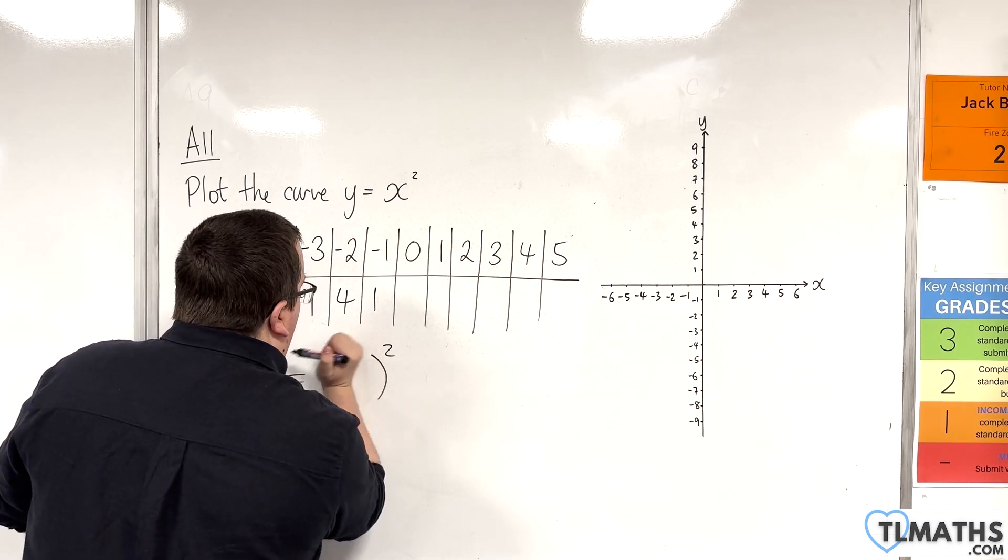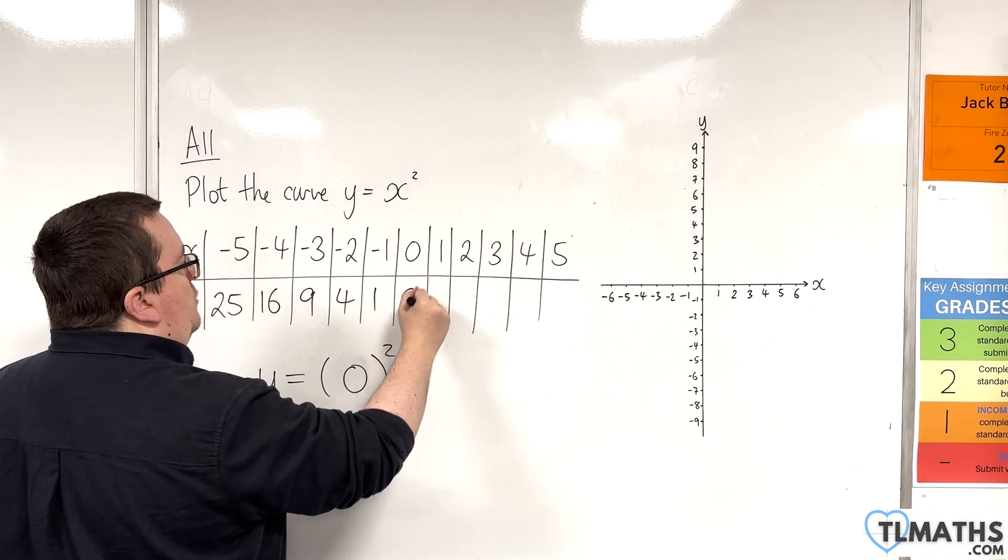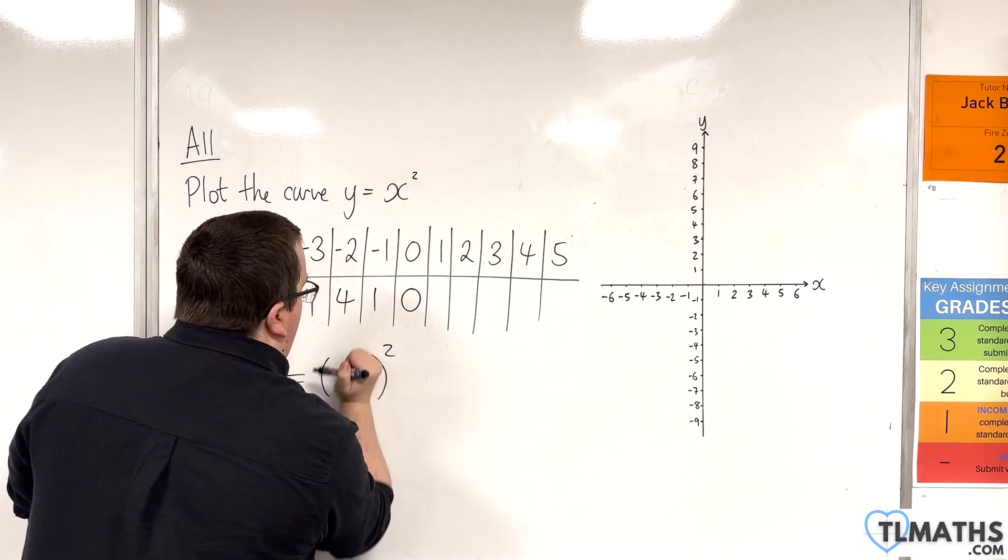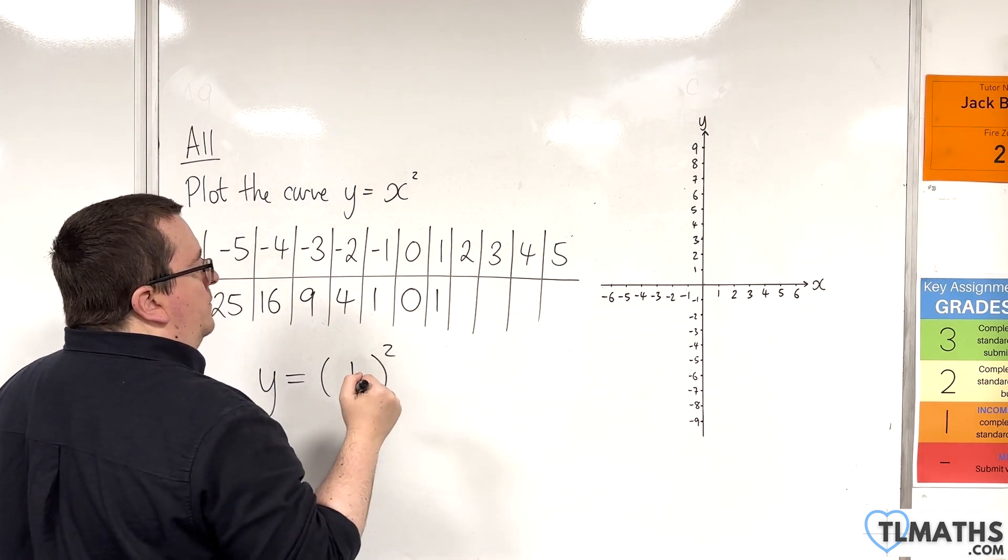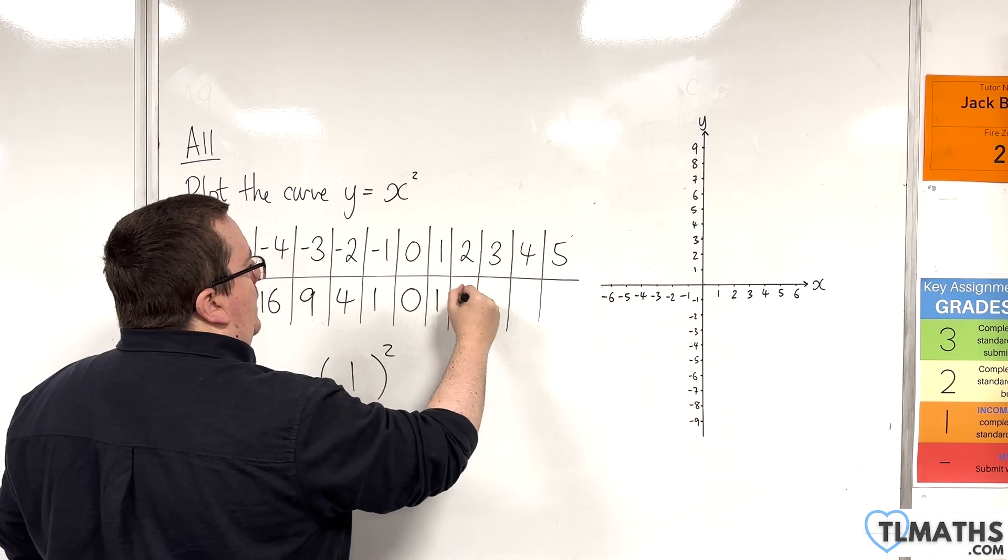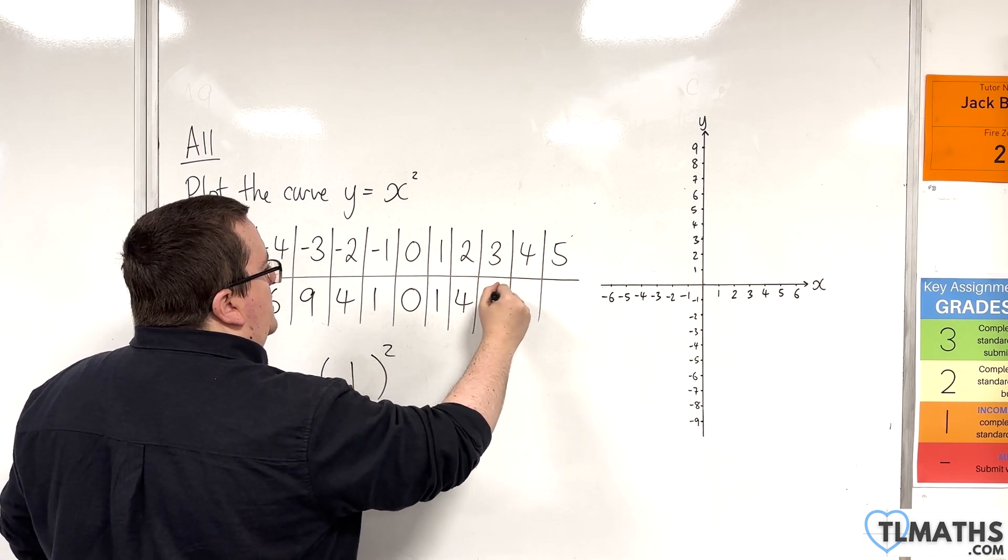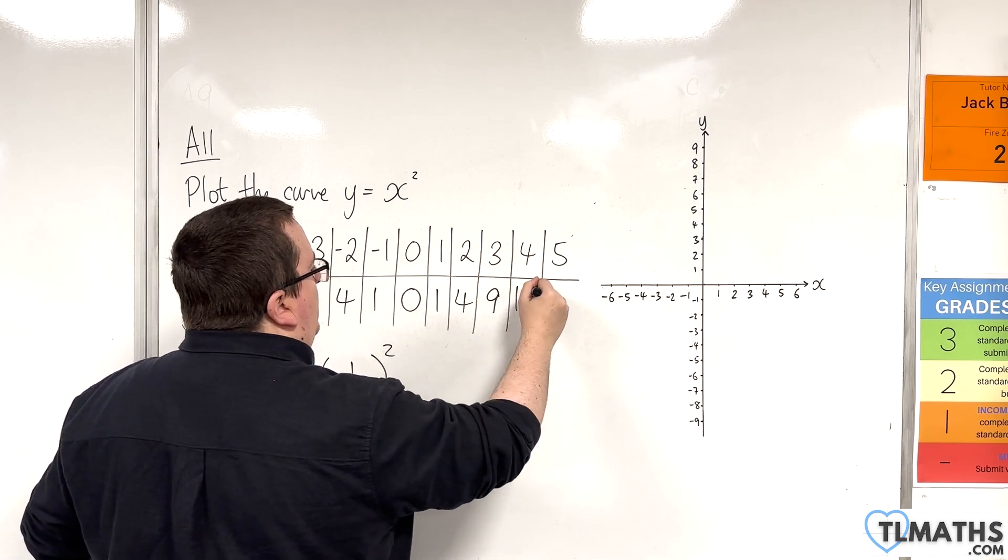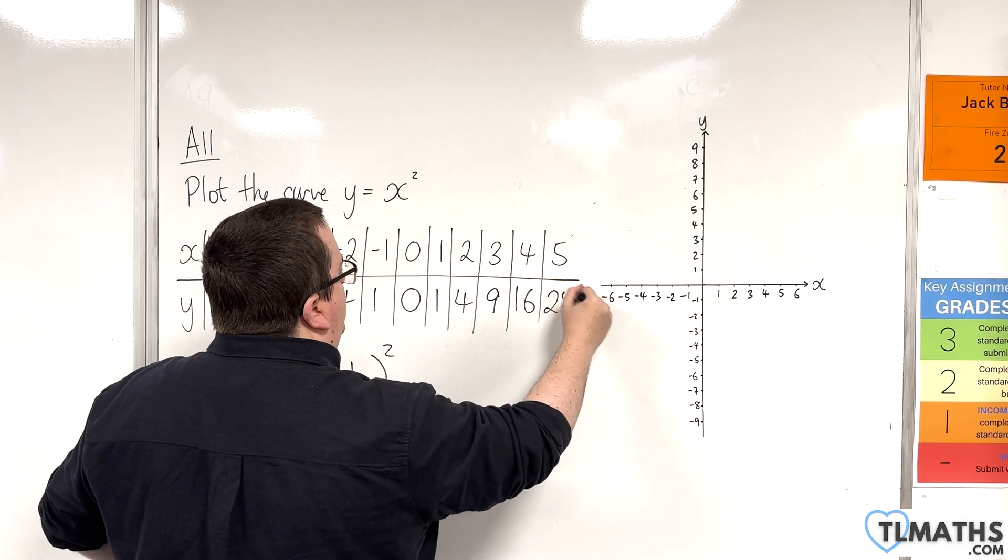Then, we're going to have 0. So, 0 squared is 0. And then, 1 squared is 1. Then, 2 squared is 4. 3 squared is 9. 4 squared is 16. 5 squared is 25.